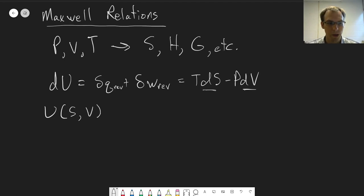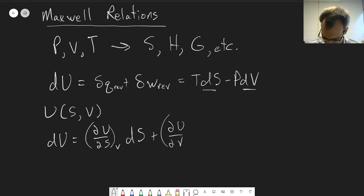And that means we can write out the total differential of U in terms of S and V. So similar to what we did in the last chapter, we are looking at just writing down the fundamental definition of a total differential in terms of partial derivatives. So we can say that this is equal to (∂U/∂S)_V dS plus (∂U/∂V)_S dV.